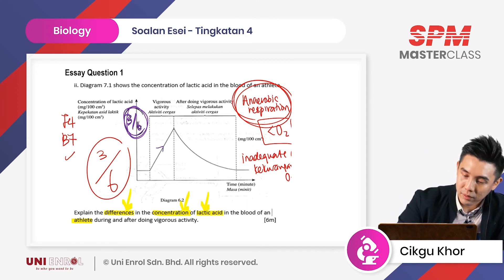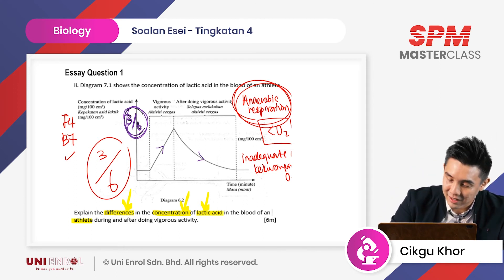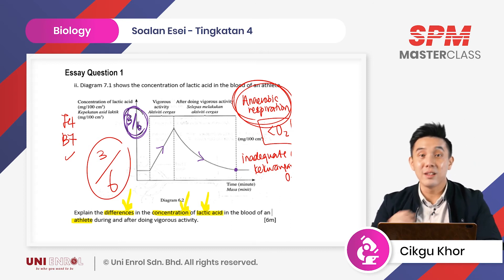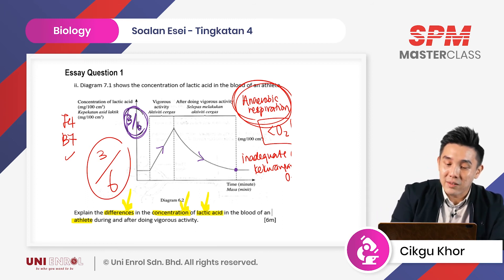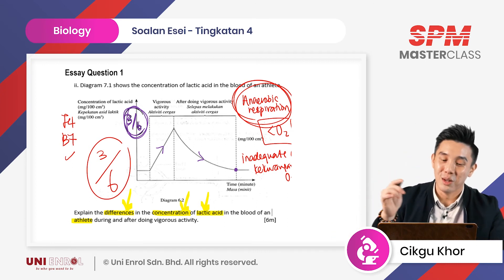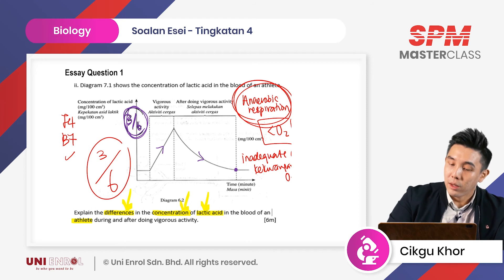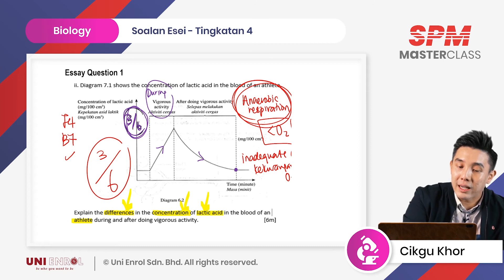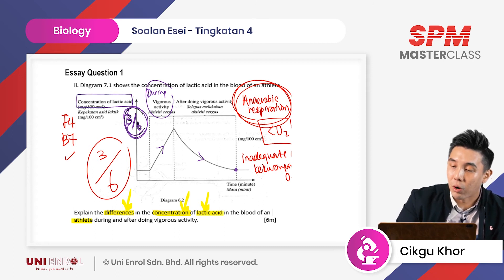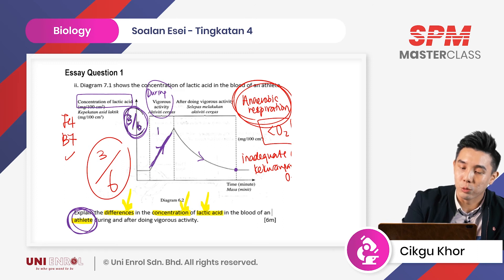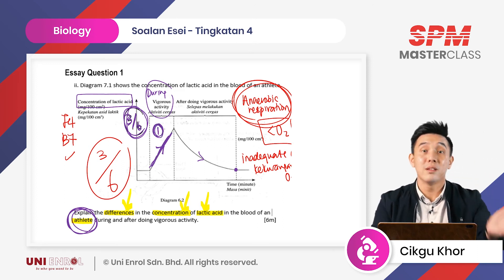Let me show you how we get the three points. Number one — during vigorous activity, the concentration of lactic acid of the athlete increases. That's one mark. Number two — after vigorous activity, the concentration of lactic acid of the athlete decreases. That's your second mark. What I mean is, based on the arrows you draw on the graph, just write it in a sentence.